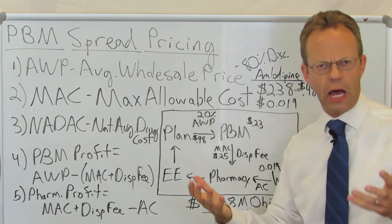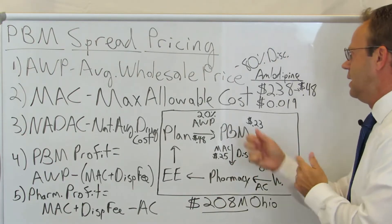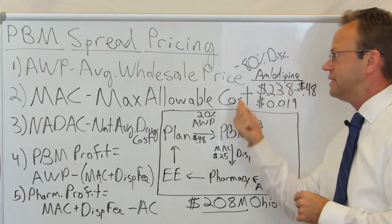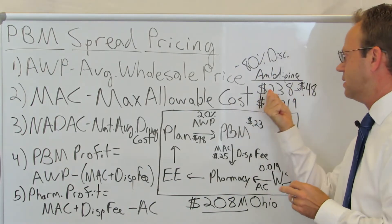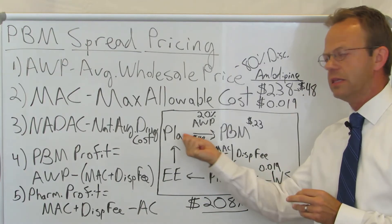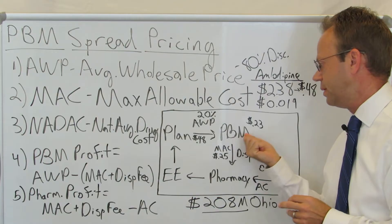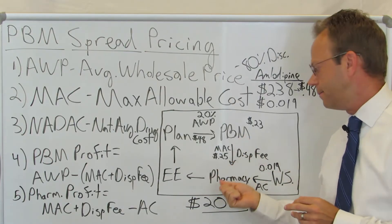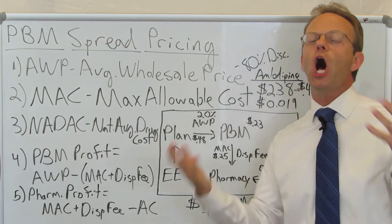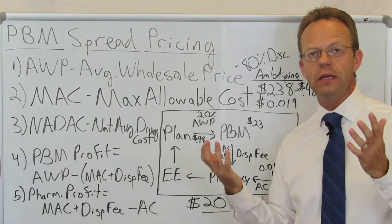They looked at amlodipine, which is a very common blood pressure medication. It's generic — the generic form of Norvasc. The AWP is $2.38. If you take the 80% discount off of that, you get $2.38 times 0.2, which gets you $0.48. So that means the plan is paying $0.48 per pill of amlodipine to the PBM. Then the PBM is paying out some sort of unknown MAC. The MAC is unknown — it is not published. It is proprietary to the PBM.